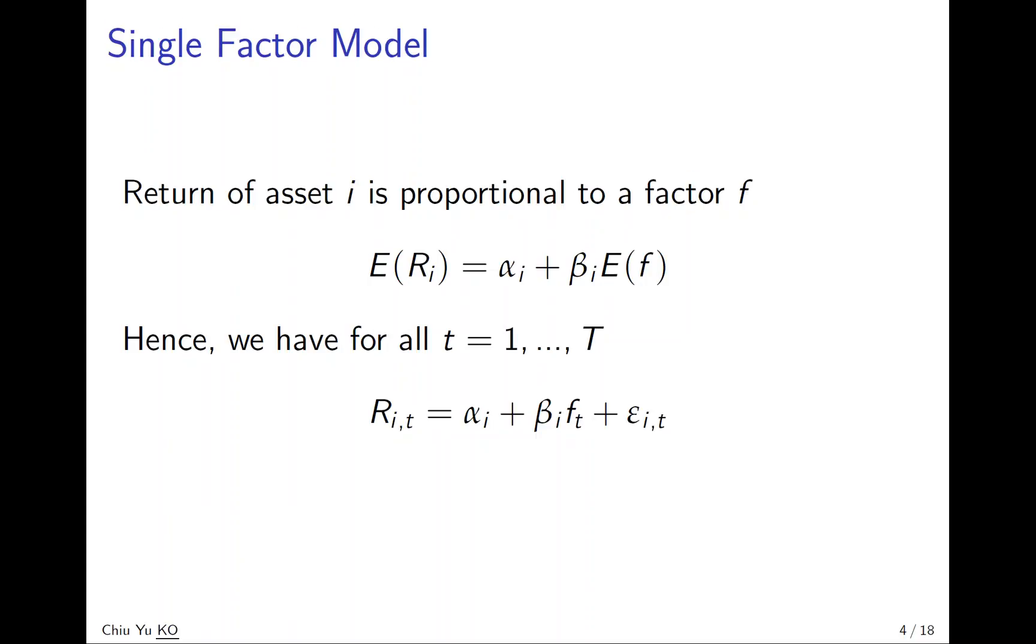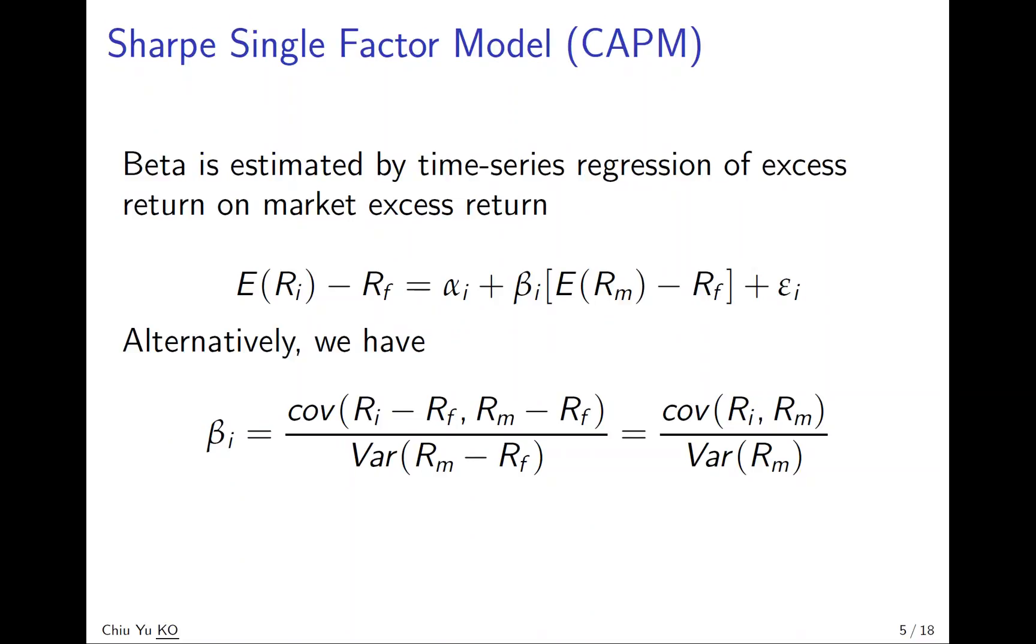So what is the factor here? In the Sharp Single Factor Model, CAPM Model, the factor is the market excess return, so it's Rm minus Rf. And it predicts not the stock return but the stock excess return. How you estimate beta is by looking at data for each stock i. You take its excess return over time and regress on its market return time series. Through this regression you can estimate beta i.